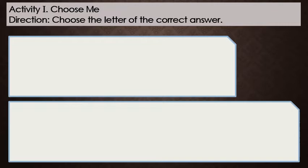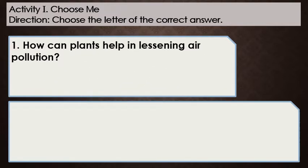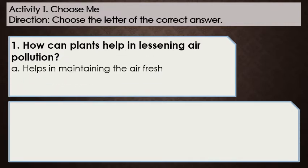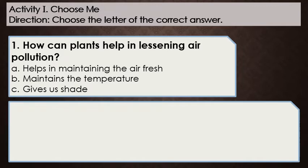Activity 1: Choose Me. Choose the letter of the correct answer. Number 1: How can plants help in lessening air pollution? A. Helps in maintaining the air fresh. B. Maintains the temperature. C. Gives us shade.